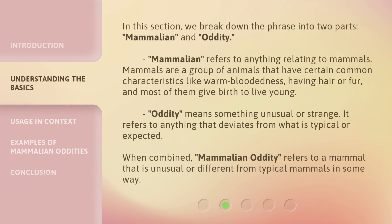In this section, we break down the phrase into two parts: Mammalian and Oddity. Mammalian refers to anything relating to mammals — animals that have certain common characteristics like warm-bloodedness, having hair or fur, and most of them give birth to live young. Oddity means something unusual or strange; it refers to anything that deviates from what is typical or expected. When combined, Mammalian Oddity refers to a mammal that is unusual or different from typical mammals in some way.